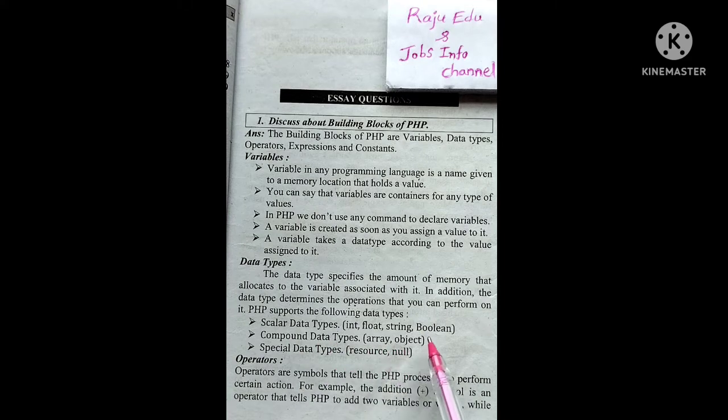Primitive data types include int, float, and boolean. Compound data types include array and object. Special data types include resource and null. We'll discuss these data types in detail in the next video.